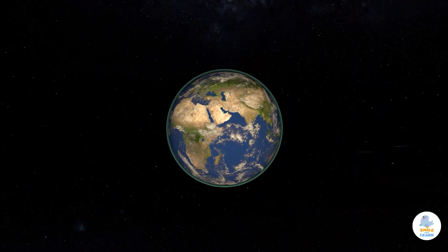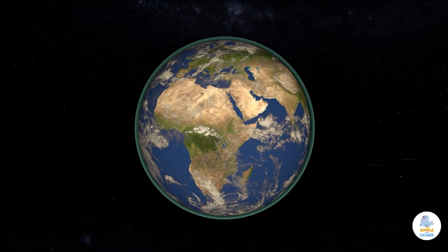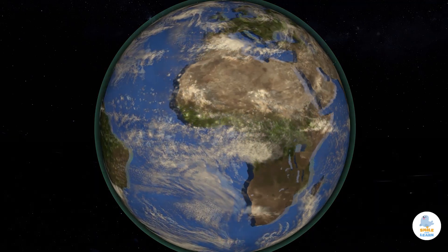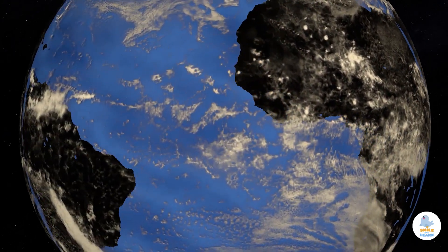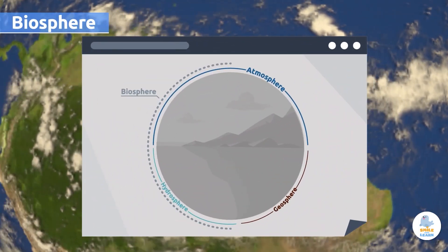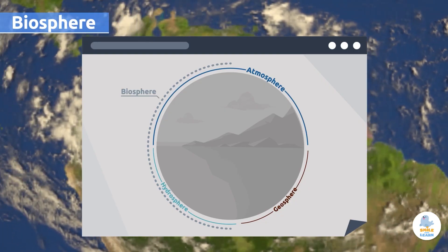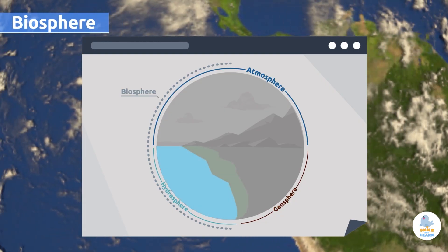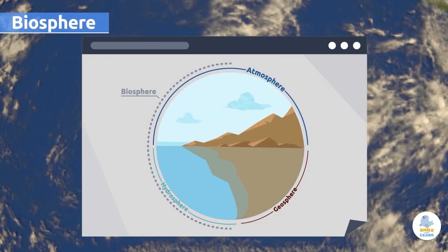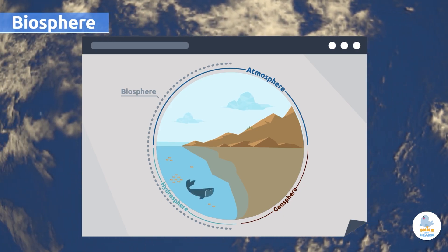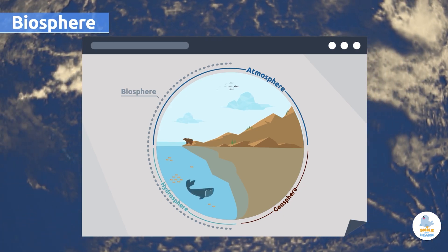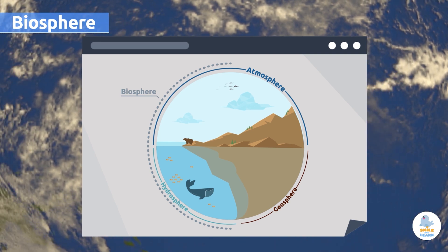As we reach the surface of the Earth, we find two different layers: the biosphere and the hydrosphere. The biosphere is made up of all living beings. This layer extends downward to the depths of the oceans and upward to about 10 kilometers over sea level. Plants, animals, fungi, and bacteria live in this layer together with all human beings.